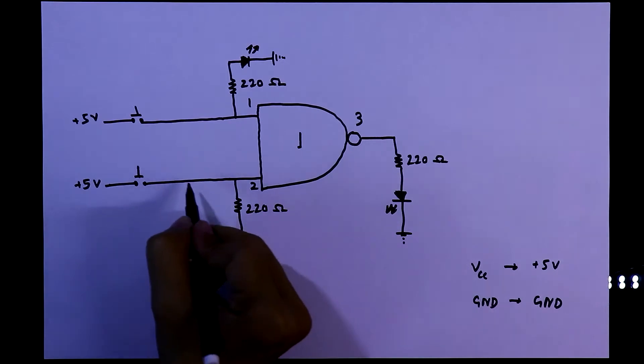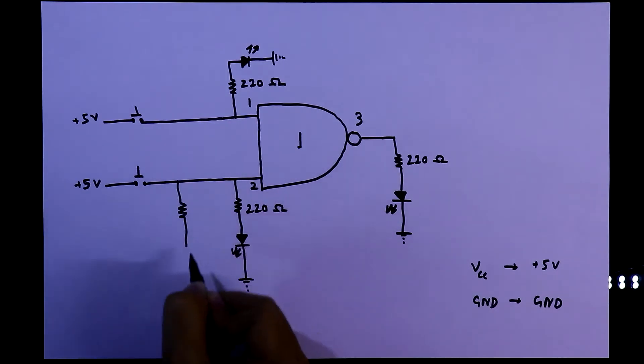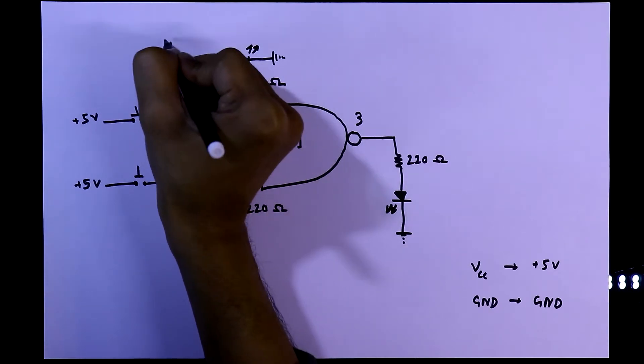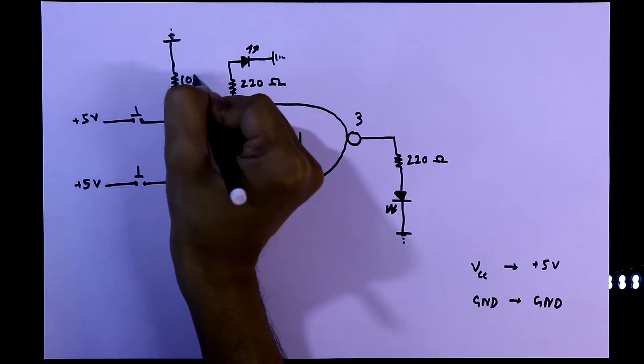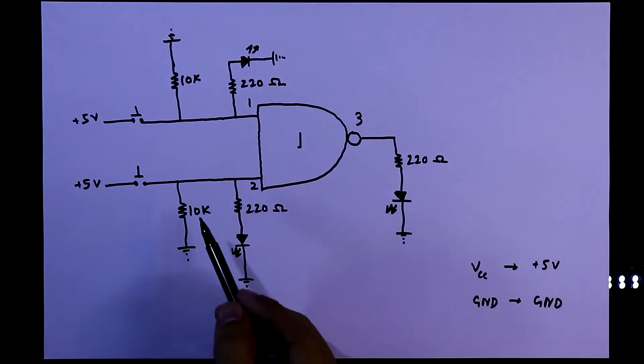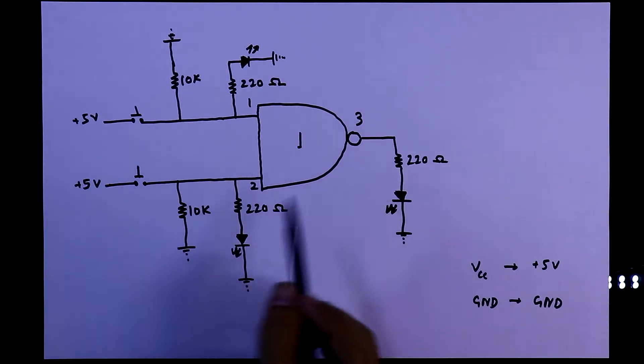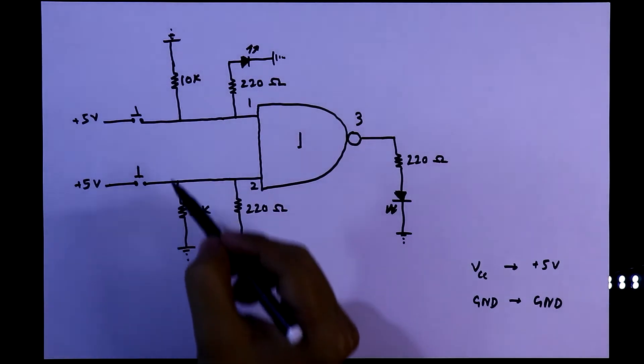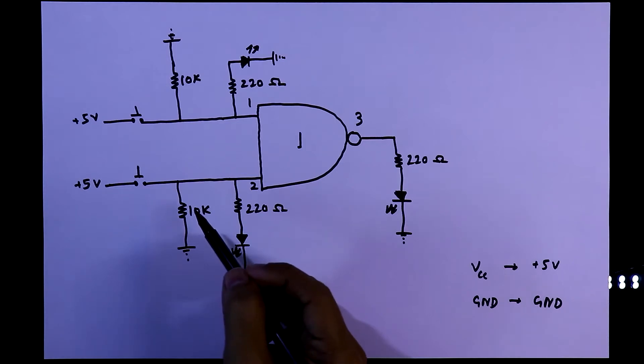Theoretically connection is completed, but in practical, we have to use pull down resistor with the input. And I will connect 10K ohms as pull down resistor. And this resistor is compulsory with the logic gates. And I already explained about this resistor, link in the description below.